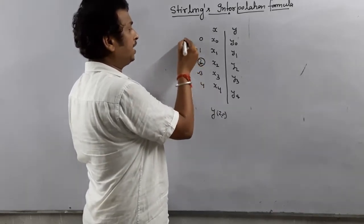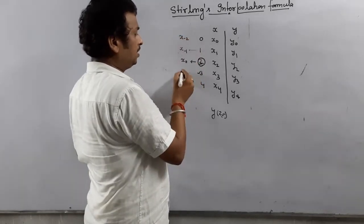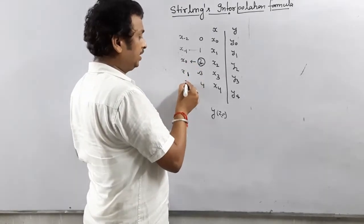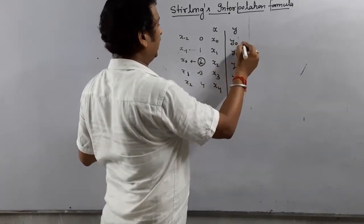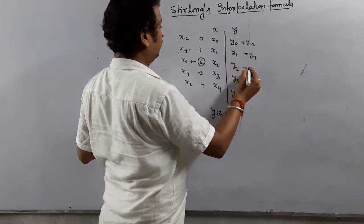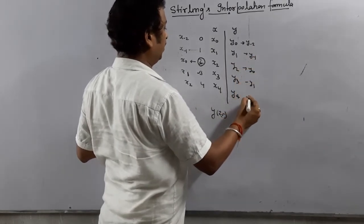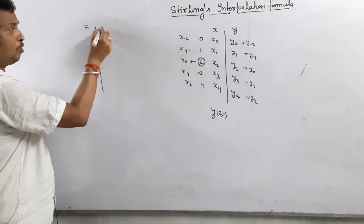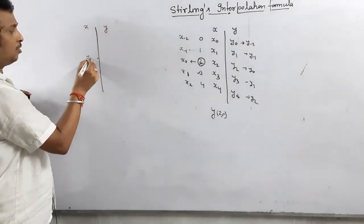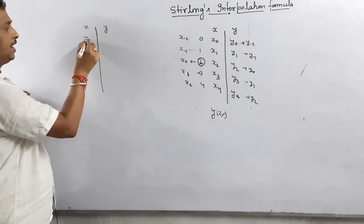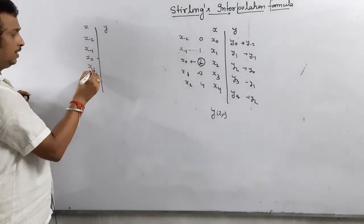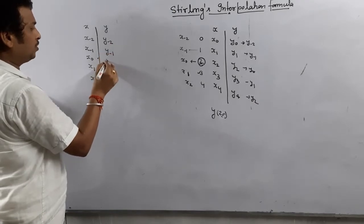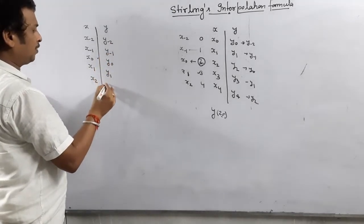Once you pick the central value x0, the values above it are denoted x-1, x-2, and x-3, while values below are x1, x2, and so on. The corresponding y values are y-2, y-1, y0, y1, y2.